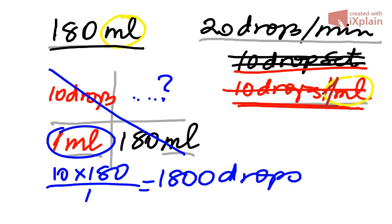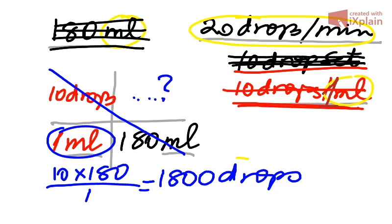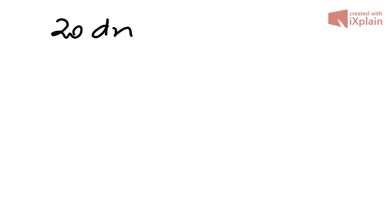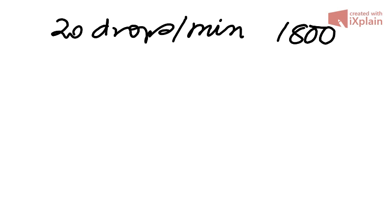So now, I have already used the 10 drop set. I have used the 180 mL. What's left is just the 20 drops per minute, and this new answer I have just got here. So let's see what we do with that. Let's copy that again. 20 drops per minute, and we have just found out that we're going to deliver 1,800 drops.